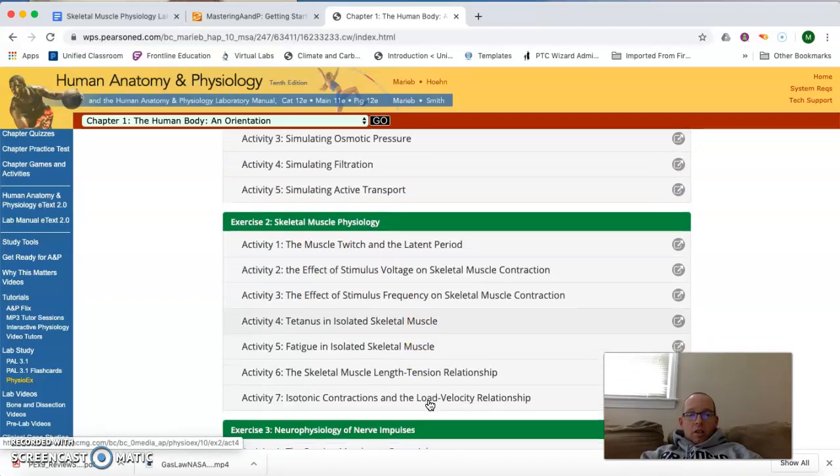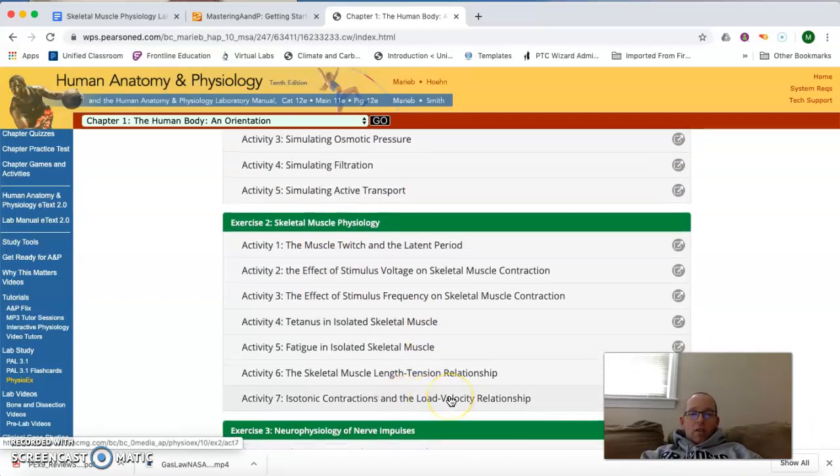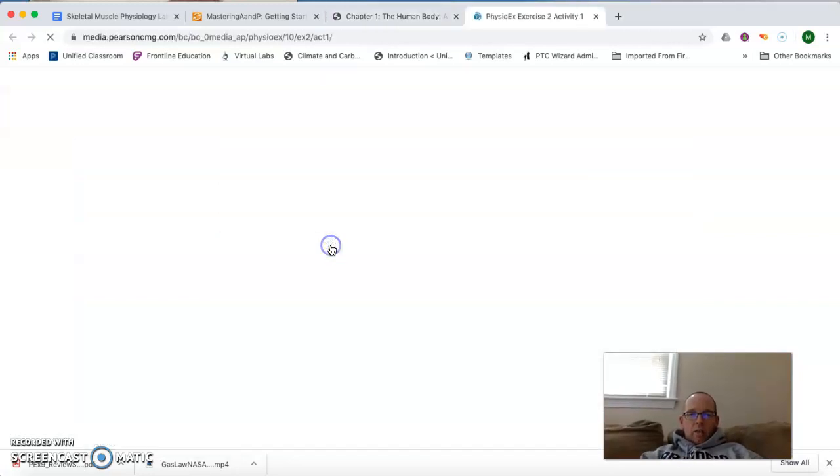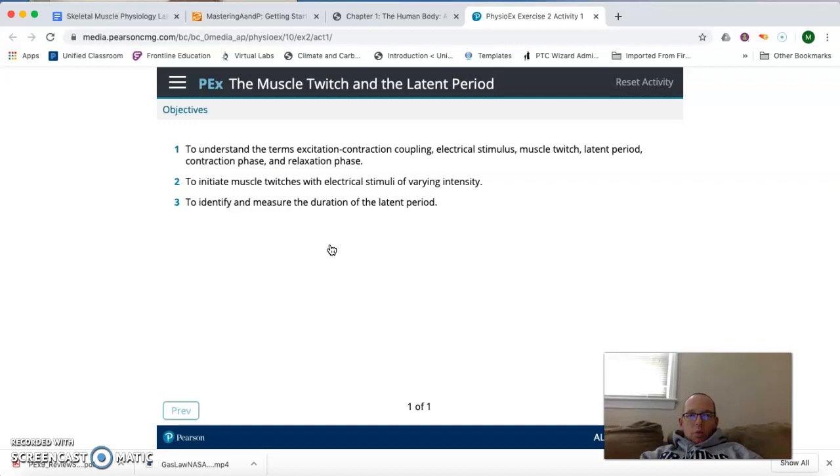And the one you're going to be doing this week is Exercise 2 on Skeletal Muscle Physiology. And you can see here, we are leaving off the very last activity, Activity 7, but I do want you to do the first six. So like I said, this might take you some time. There's really this and one other short activity to do this week. So take the time to really do a good job on this. So I'm going to go ahead and click on Activity 1, and it should open up in a separate window.